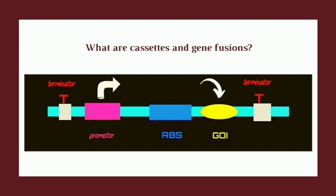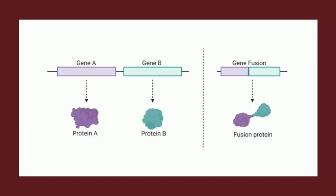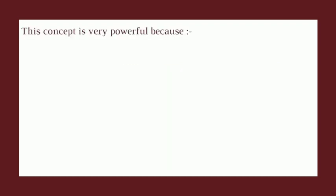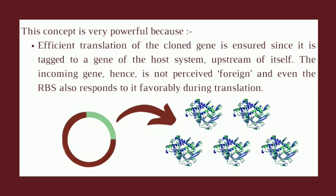The foreign gene is designed to be inserted within a restriction site in such a way that these three critical components are not disturbed. In addition, a self gene encoding a selectable product may be fused to the incoming DNA by design, leading to the production of a fusion protein. This concept is very powerful because efficient translation of the cloned gene is ensured since it is tagged onto a gene of the host system upstream of itself. The incoming gene is hence not perceived as foreign, and the RBS also responds to it favorably during translation.